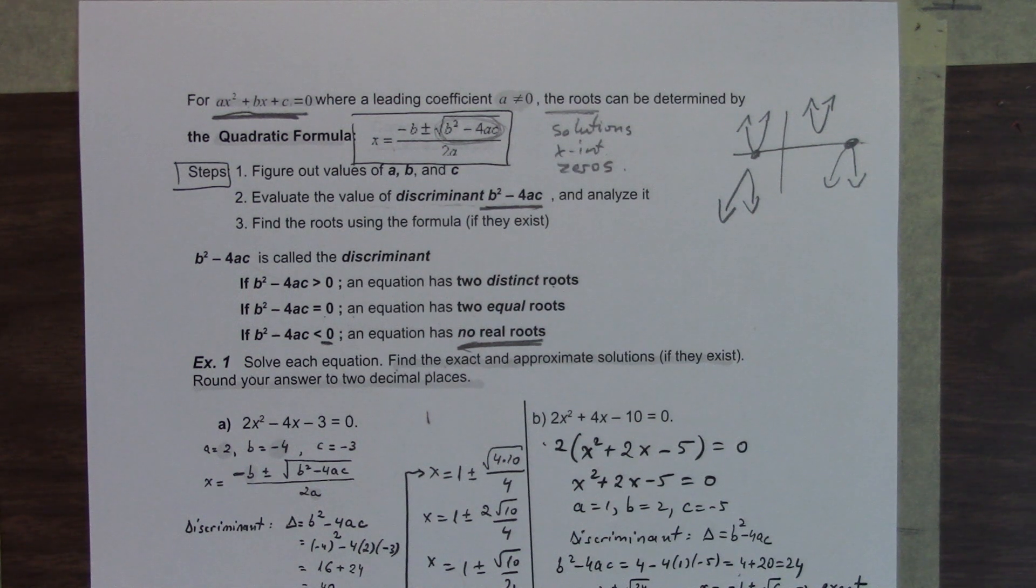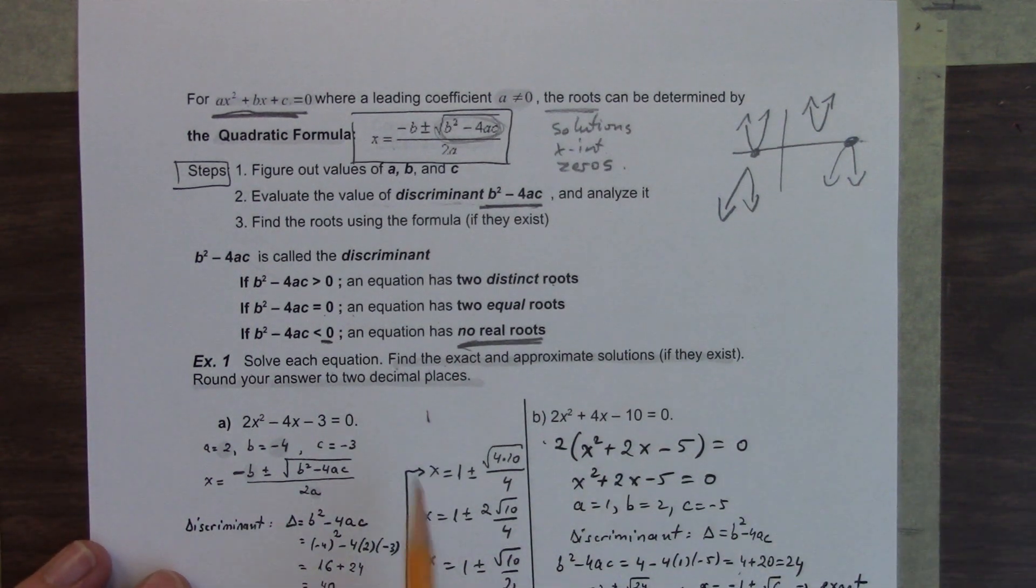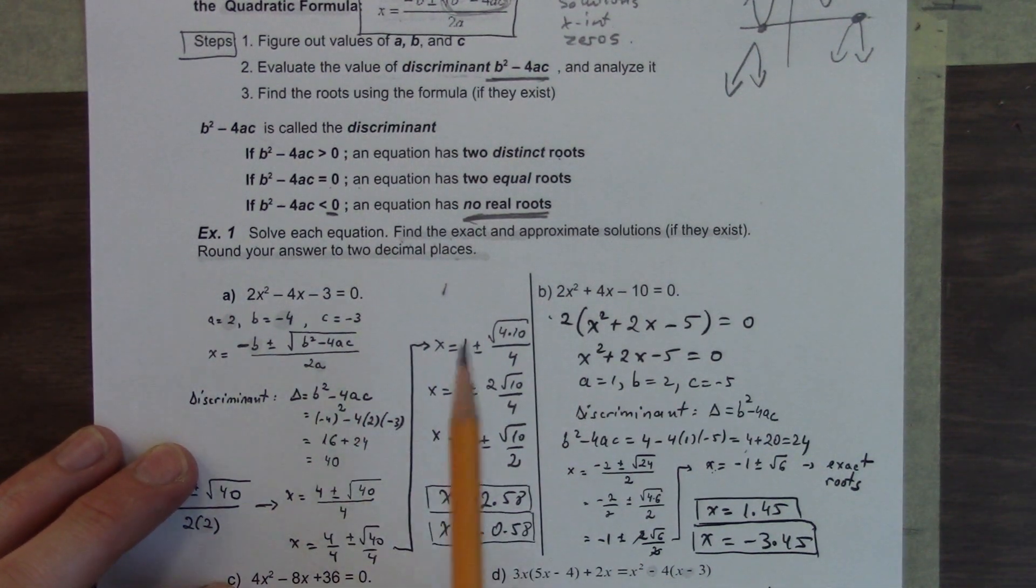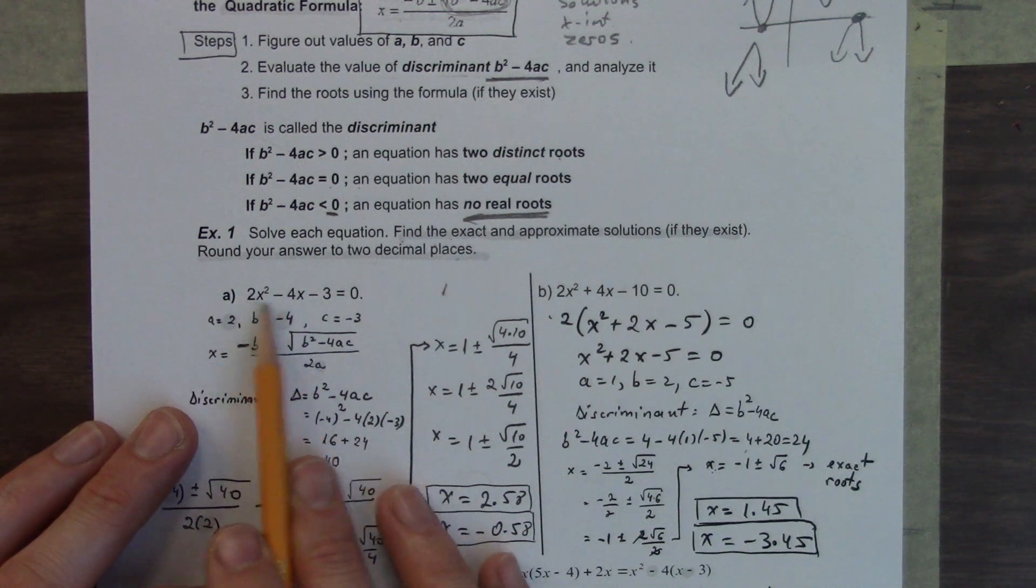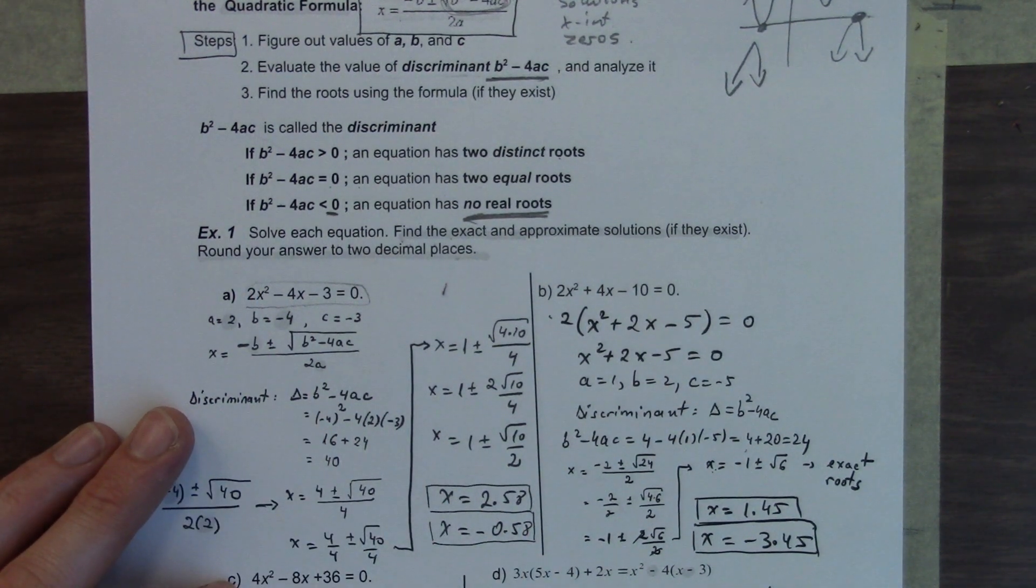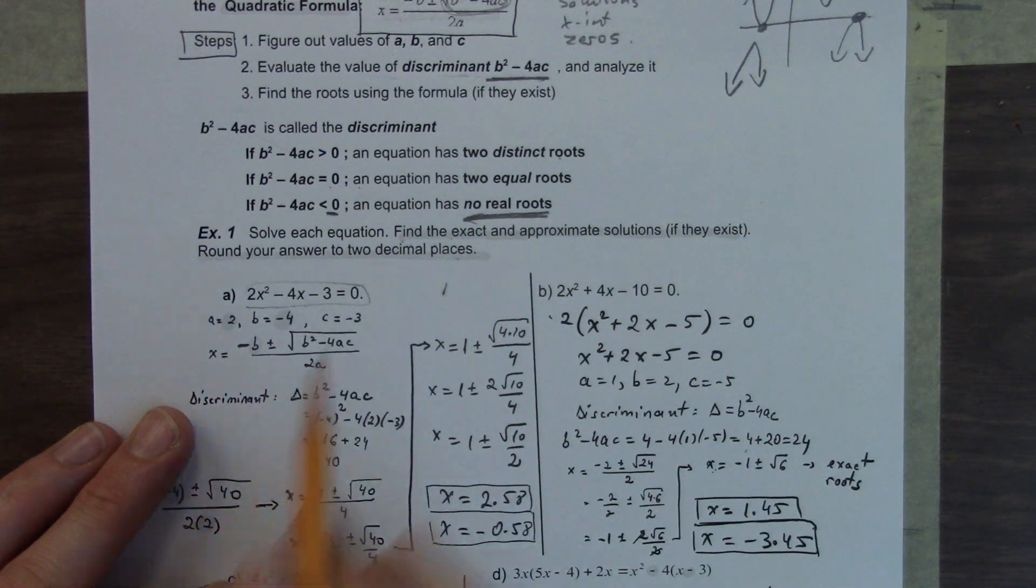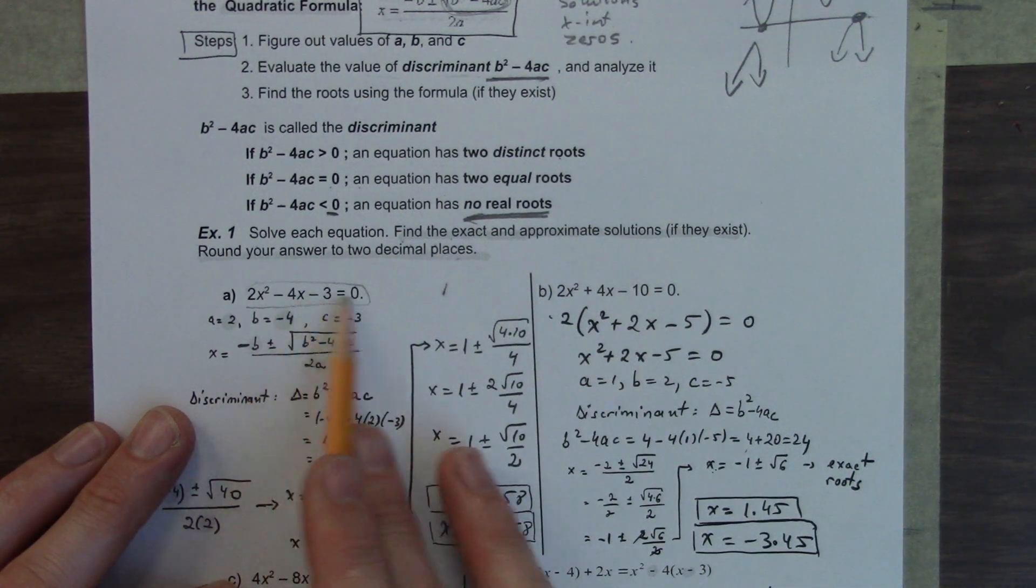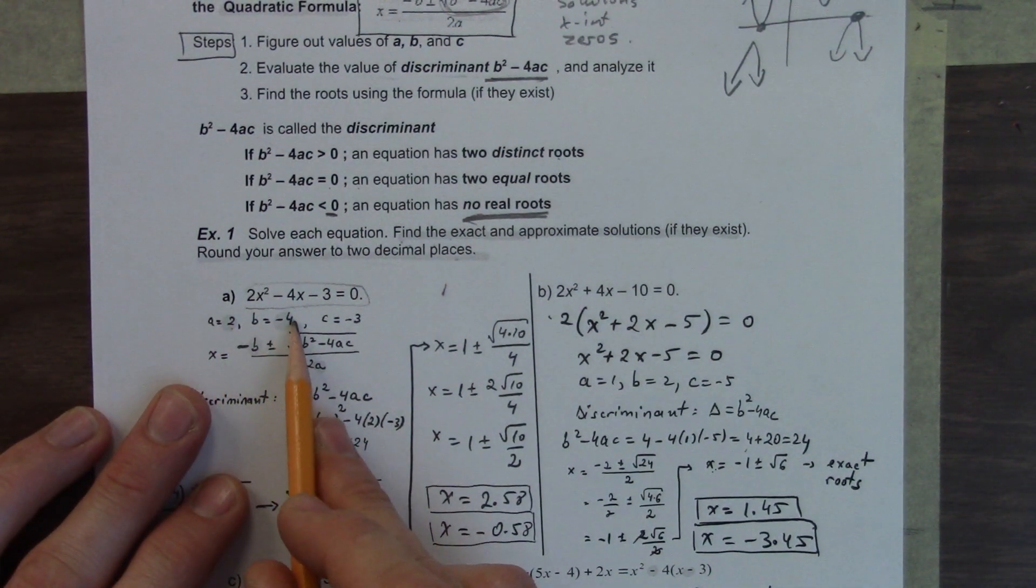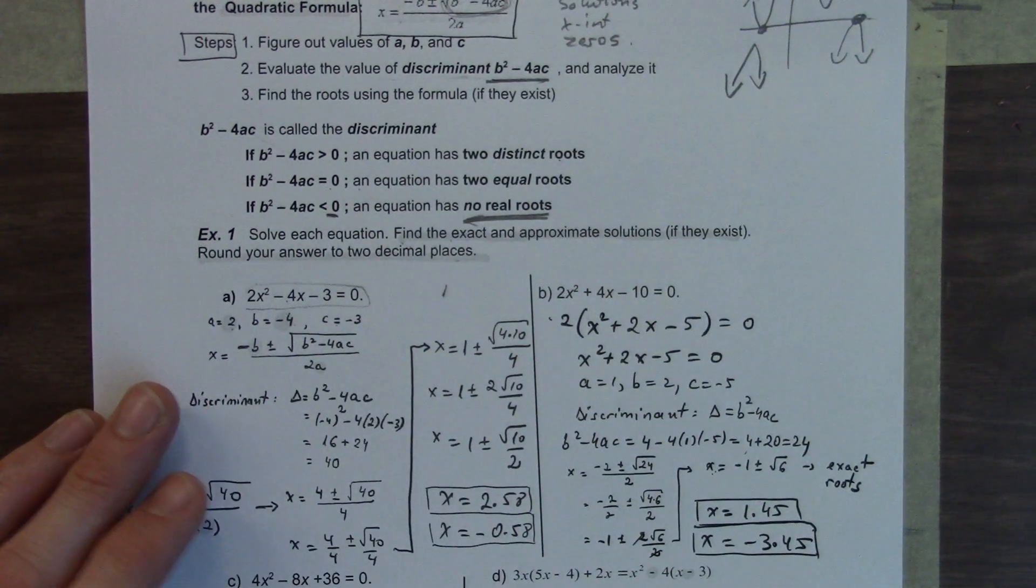All right, so the example one, we're going to solve each equation now. We're going to find the exact and appropriate solutions if they exist. Here we have our first equation. Is this in standard form? Yes it is, right? That's standard form: ax squared minus bx minus c. So our a value is 2, our b value is negative 4, and our c value is negative 3.